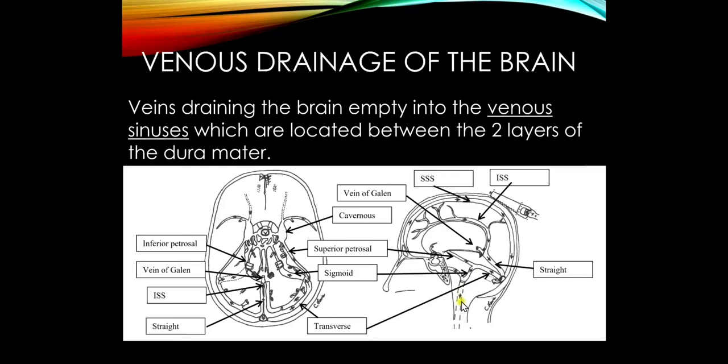We also have drainage from the cavernous sinus. The eye and orbital contents drain into the cavernous sinus, which empties into the superior petrosal sinus and the inferior petrosal sinus. The superior petrosal sinus joins with the transverse sinus into the sigmoid sinus, and the inferior petrosal sinus joins with the sigmoid sinus; both empty out through the internal jugular vein.